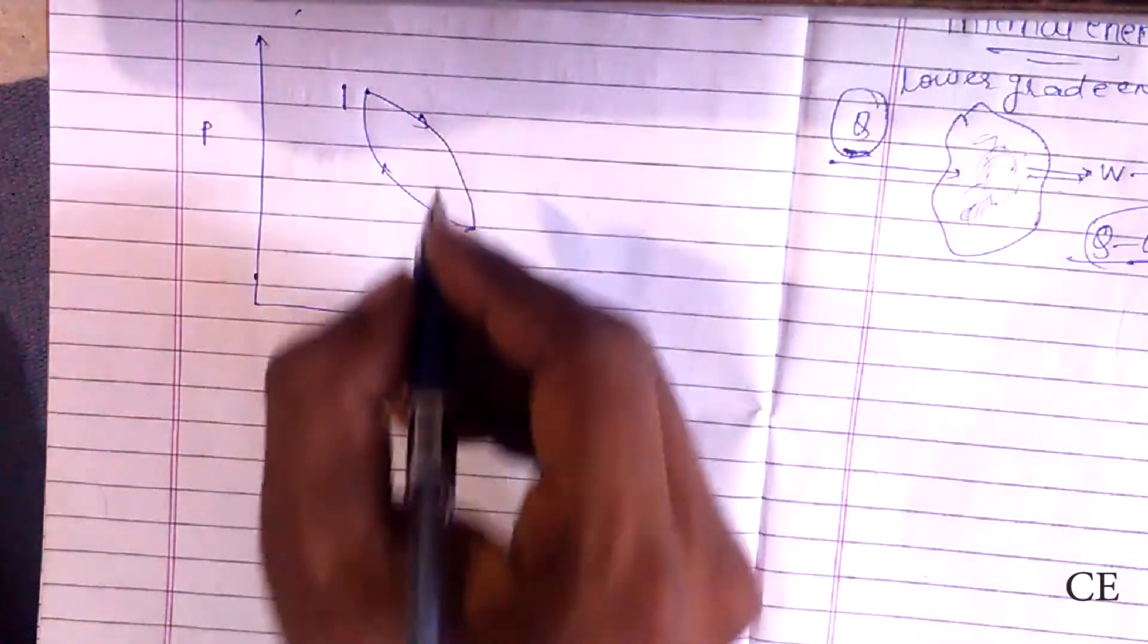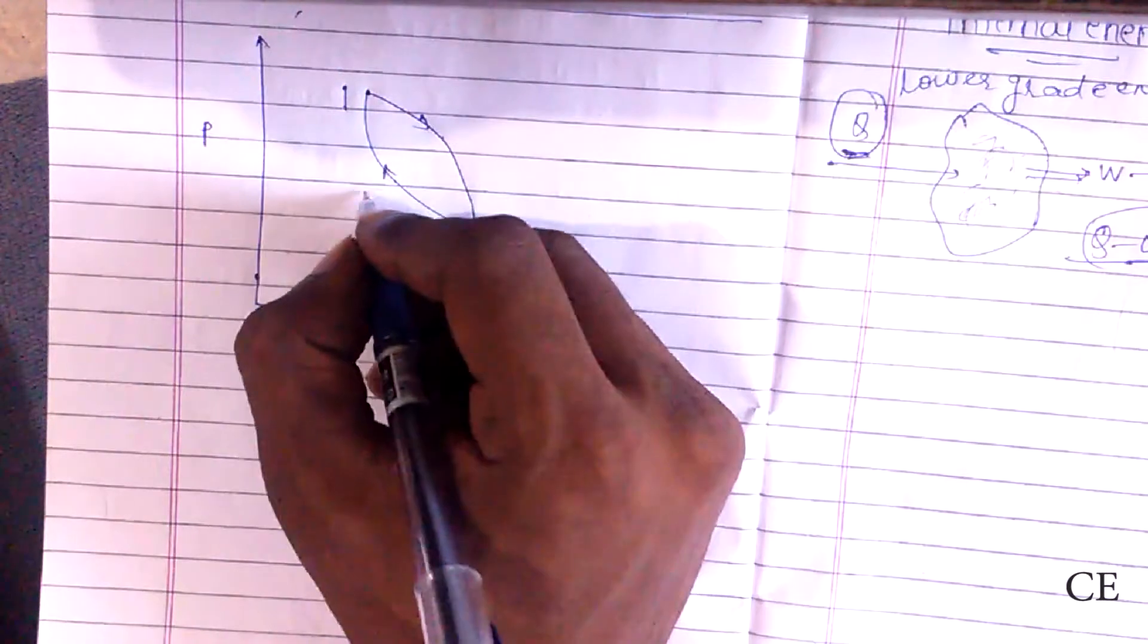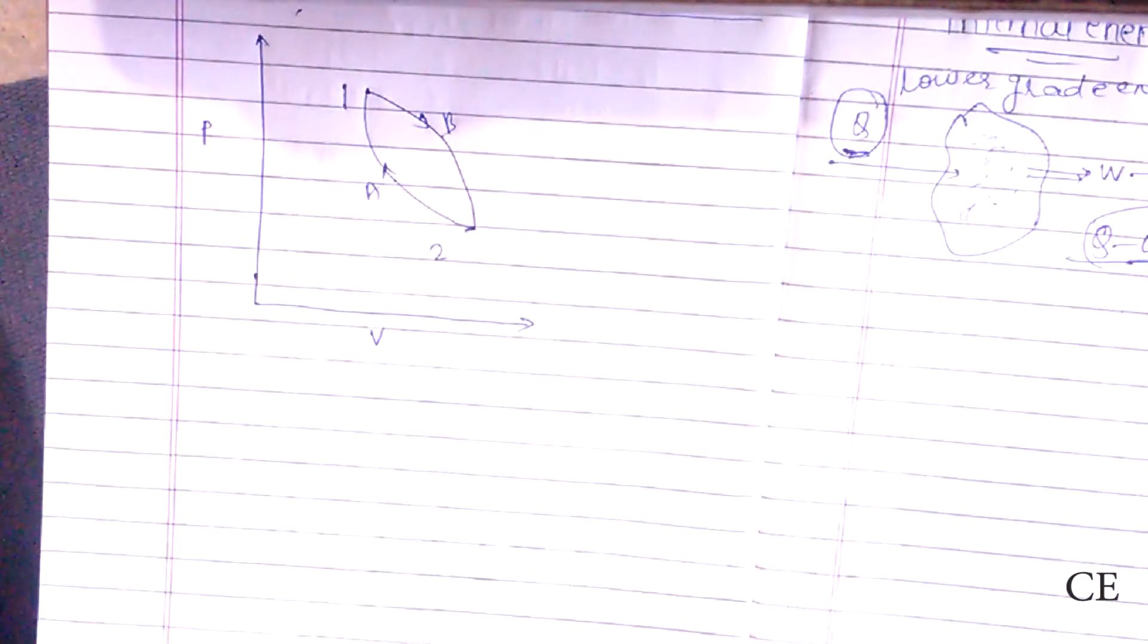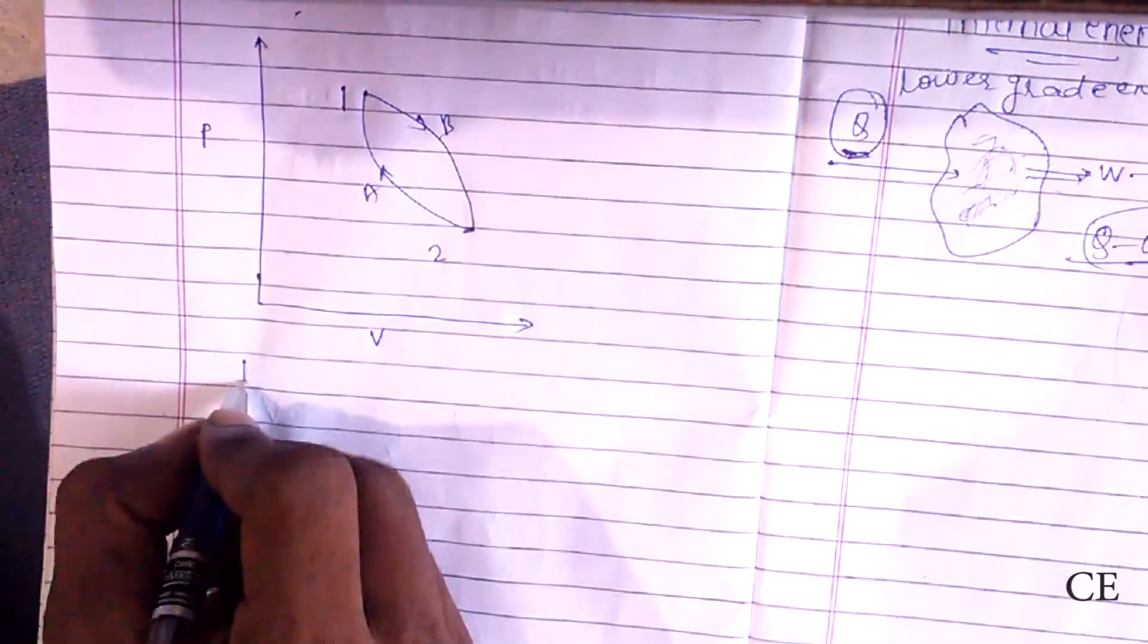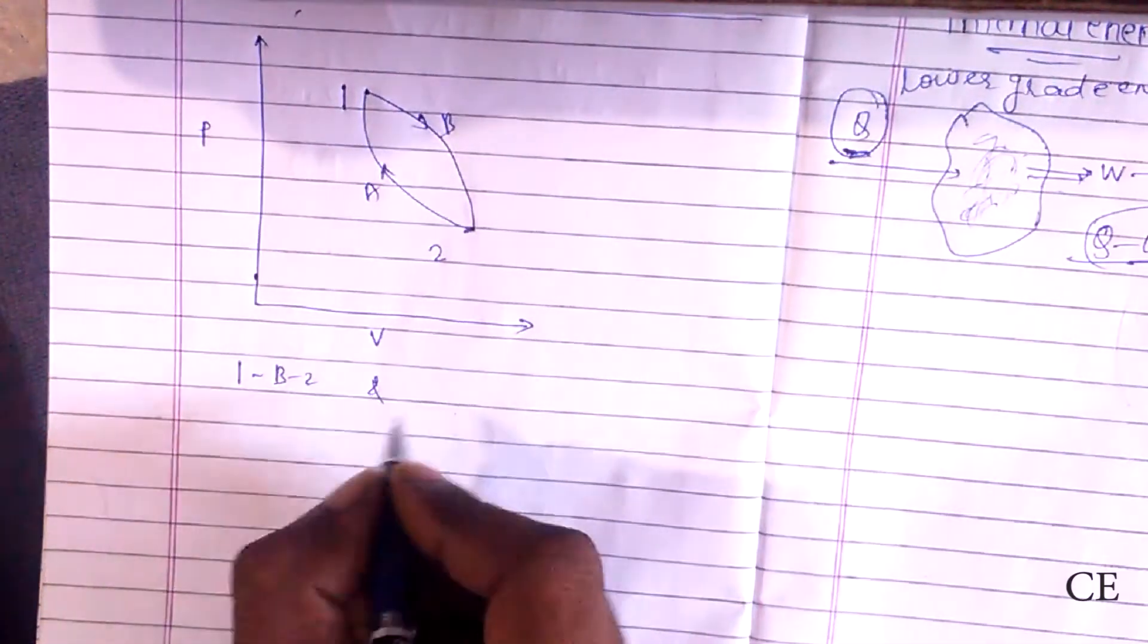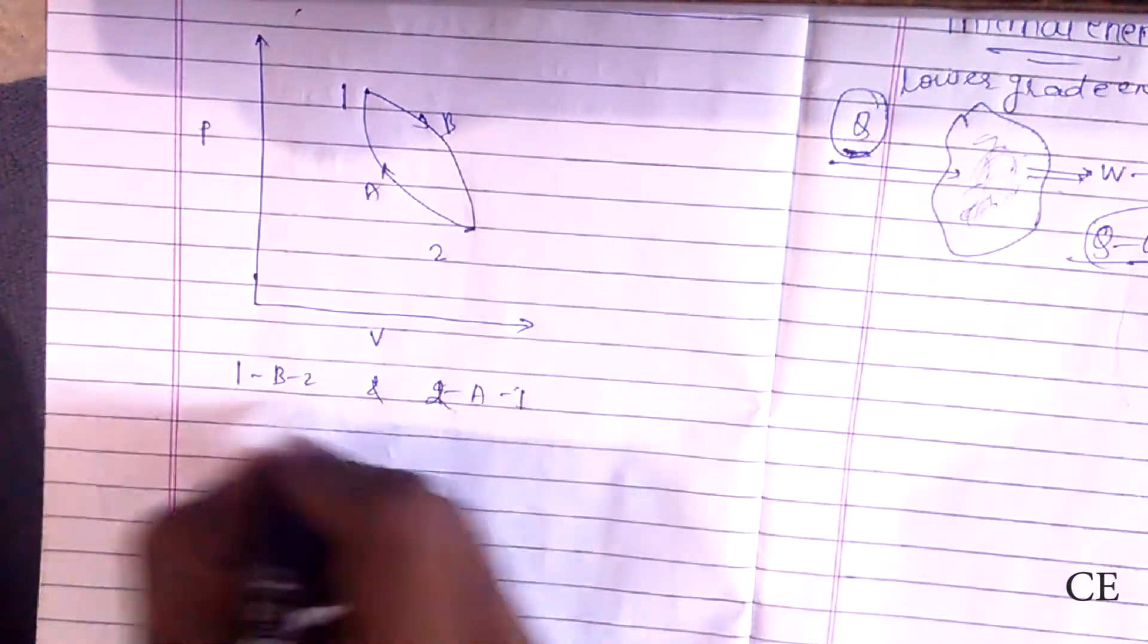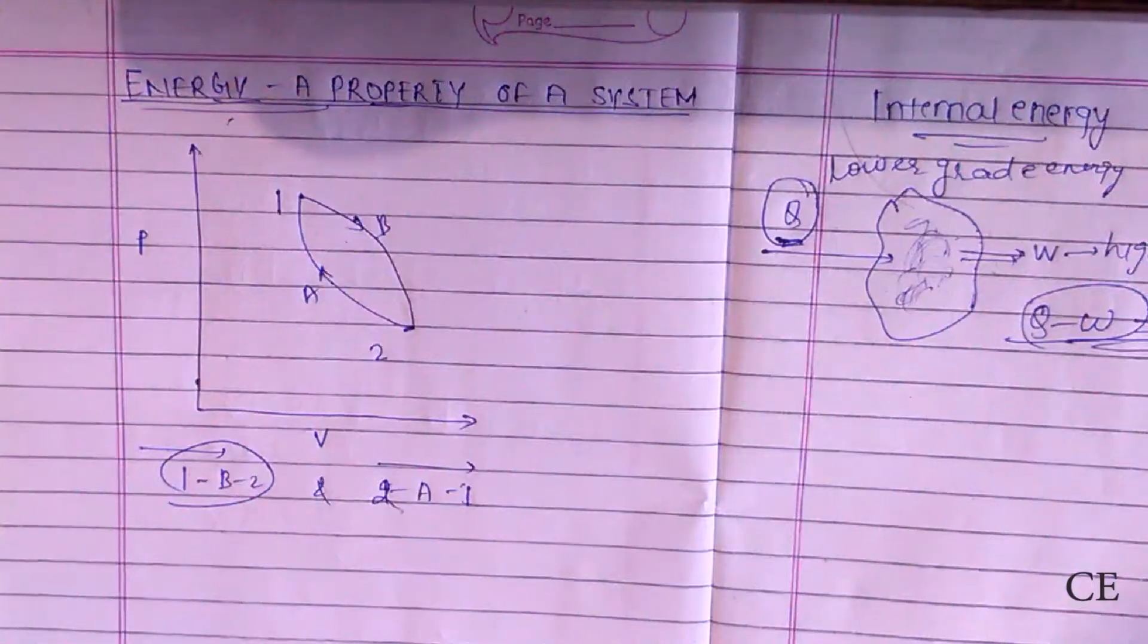Now what will be the equations for this? Suppose this one is state one and this is path A, this is B. The path one B two is for going from one to two, and two A one for returning.